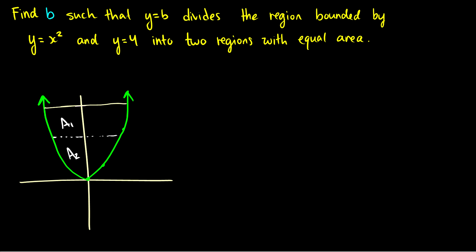Well essentially what we want is we want the areas a1 and a2 to be the same. So we want the integral from zero to some constant b of some function f of x should be equal to a2.